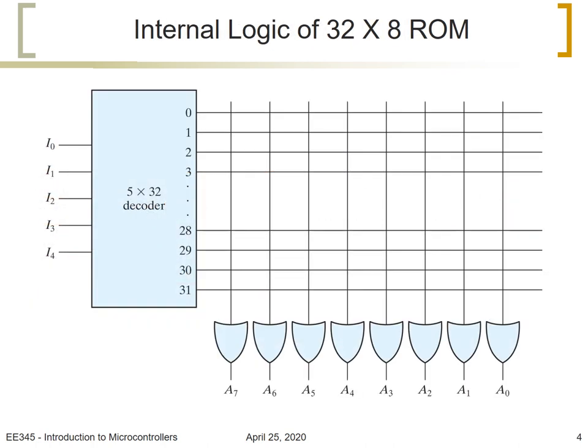This is an example showing the internal logic of this 32 by 8 ROM. So the 5 inputs we can call them I0, I1, I2, I3, and I4, where I4 will be the most significant and I0 the least significant. This will go through a decoder which is 5 by 32. The decoder will have 32 outputs: output 0 when the inputs are all 0s, and output 1 will be enabled when the inputs represent the decimal 1, or 2, 3 until 31.